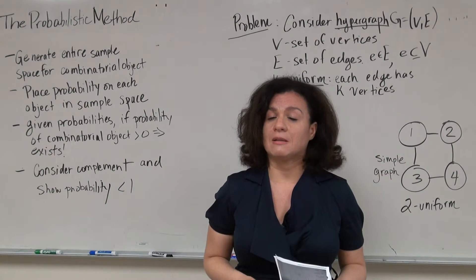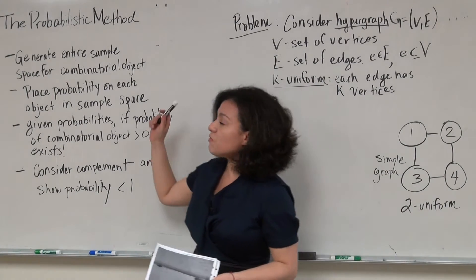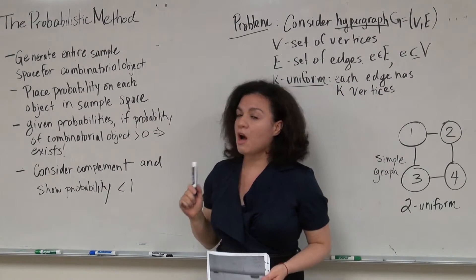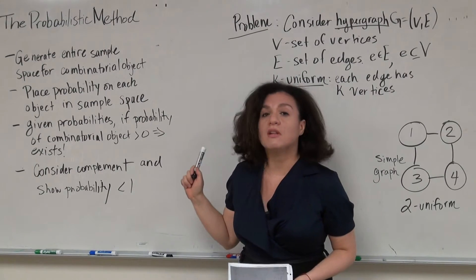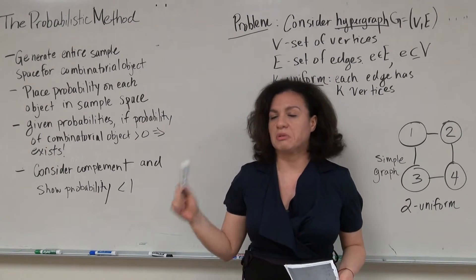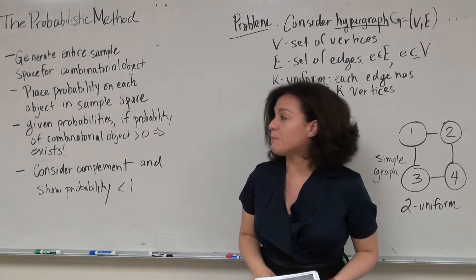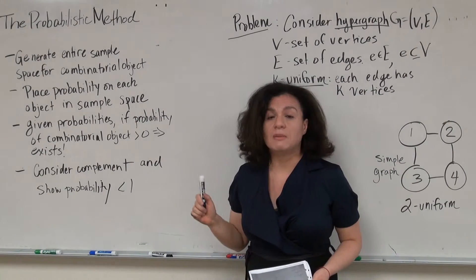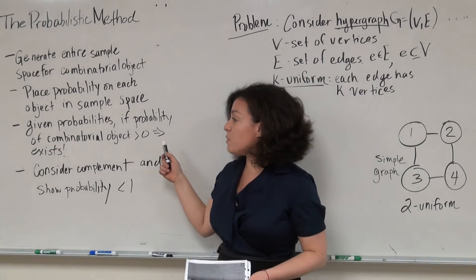First I'm going to overview what the probabilistic method is, and then we're going to do an example on hypergraphs. For the probabilistic method, you generate the entire sample space for the combinatorial object of interest, putting probability on each object in the sample space. We don't enumerate this explicitly often, but we know how to put probability on each point. Then, given these probabilities, if we can show that the probability of the combinatorial object of interest is greater than zero, then we show that it exists.